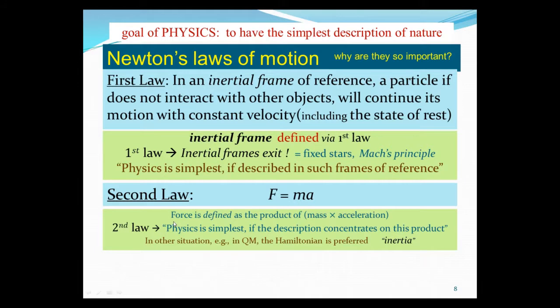Now, F equals MA can also be regarded as a definition of force as the product of mass times acceleration. And so therefore, the important statement of the second law is saying that the physics is simplest, the motion simplest, if the description concentrates on this product of mass times acceleration. Like in other situations, force may not be the most useful concept. In quantum mechanics, we prefer to use the Hamiltonian. By the way, the mass that appears in F equals MA has another name: inertia. This is inertial mass, because it's a resistance to all forces. And it's somewhat related but different from the inertial frame.